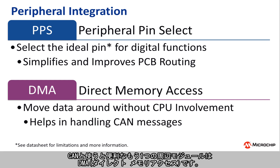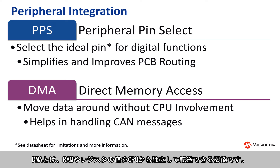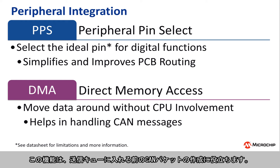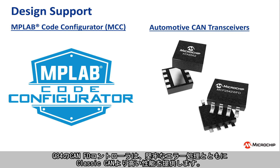Another peripheral that works well with the CAN interface is Direct Memory Access, or DMA. DMA is a feature that allows for registers and values in RAM to be moved independently of the CPU. This feature can be used to help assemble the CAN packets prior to putting them into the transmission queue. The CAN FD controller on the Q84 offers a great performance boost over classic CAN while continuing to provide robust error handling.